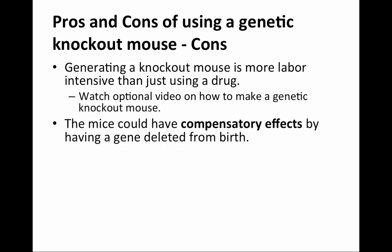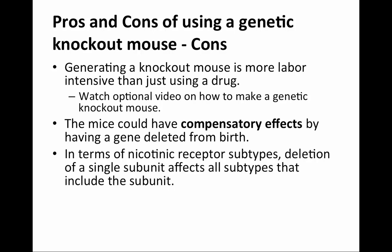Secondly, the mice can have compensatory effects by having a gene deleted since birth. For example, the alpha-4 subunit is upregulated in an alpha-6 knockout mouse compared to wild-type littermates. So this deletion of the alpha-6 subunit has caused a compensatory increase in alpha-4 expression, and the observed phenotype of the knockout may be influenced by these compensatory mechanisms.